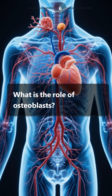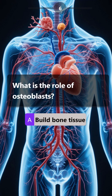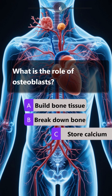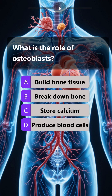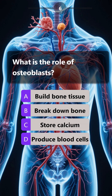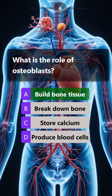What is the role of osteoblasts? Build bone tissue, break down bone, store calcium, produce blood cells. Answer is: build bone tissue.